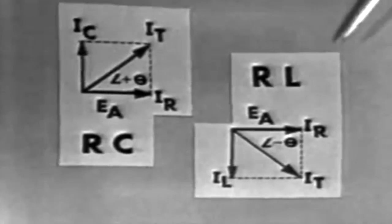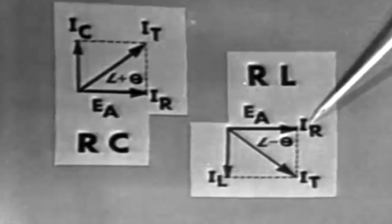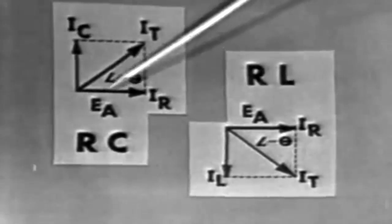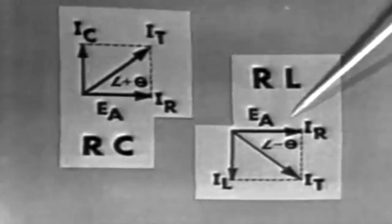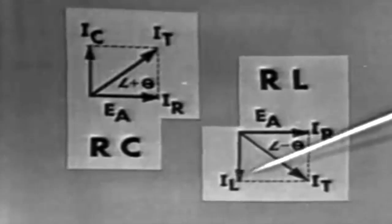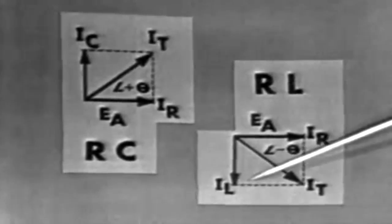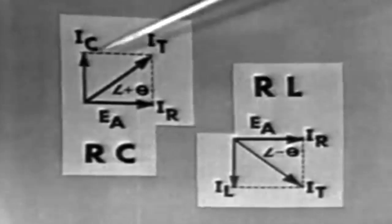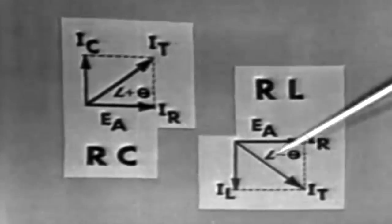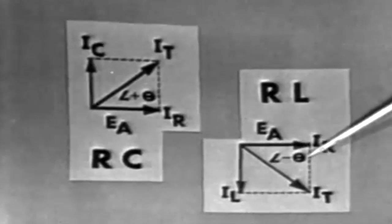In the RL circuit, EA is plotted as the reference vector and IR, of course, is shown in phase with EA, the same way as in the RC circuit. However, since the voltage in the inductor leads the current, or saying it another way, the current in the inductor lags the applied voltage, we must show the 90 degree phase shift caused by IL. It will be plotted 90 degrees behind EA or in the opposite direction of IC. Current in this circuit is said to lag EA, and it has a negative phase angle.